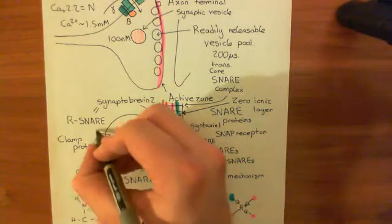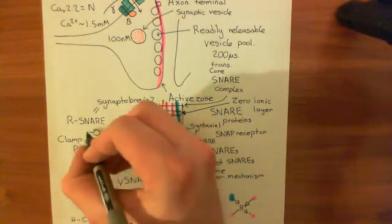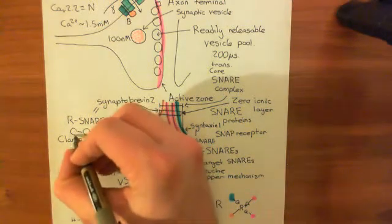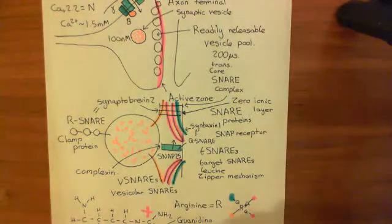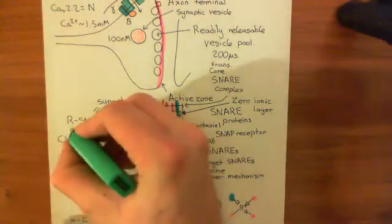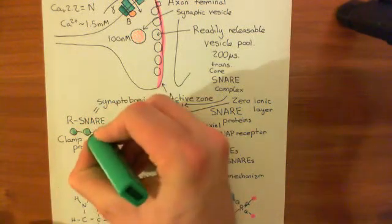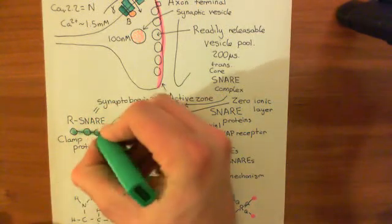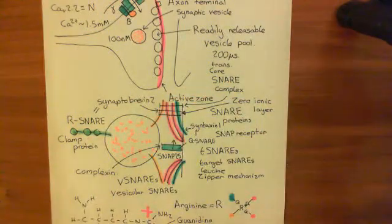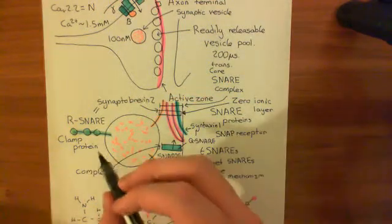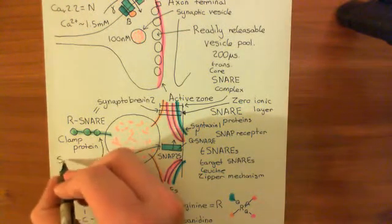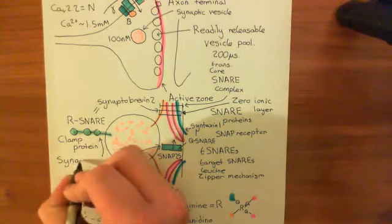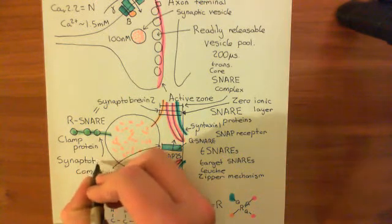In the membrane of the vesicle, there is another important protein known as synaptotagmin. When calcium goes up in the vicinity of synaptotagmin, calcium is going to bind to synaptotagmin.